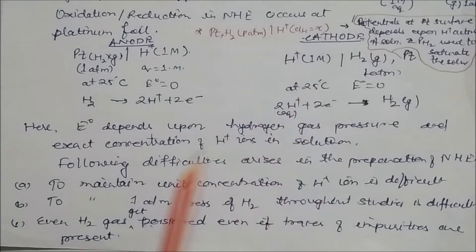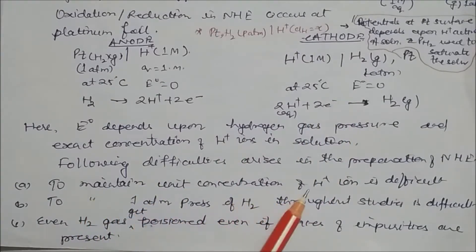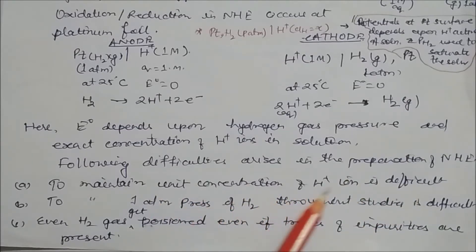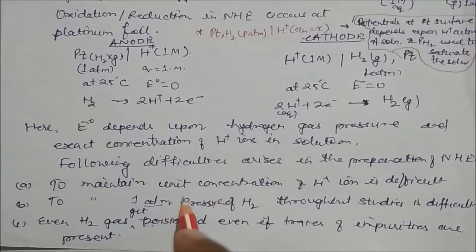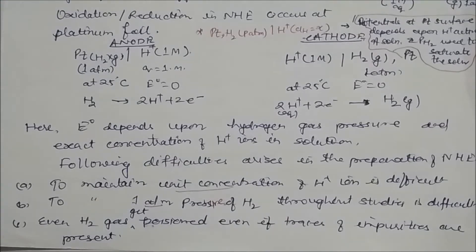There are three problems with the normal hydrogen electrode. First, it is very difficult to maintain a unit concentration of H⁺ ions — maintaining one molar H⁺ concentration is very difficult. Second, it is very difficult to maintain exactly one atmospheric pressure of hydrogen gas throughout. Third, if hydrogen gas is poisoned — that is, if traces of impurities are present — then the electrode gets poisoned. Because of these three problems, we require another type of reference electrode.